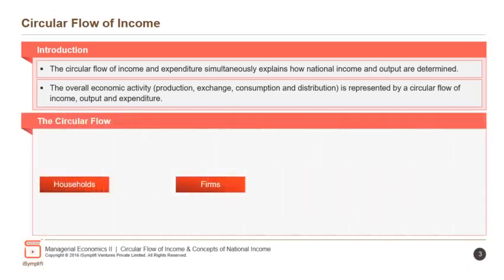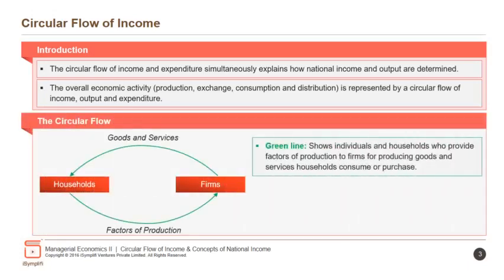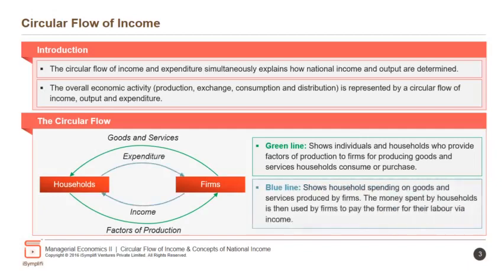In the circular flow, the green line shows individuals and households who provide factors of production to firms for producing goods and services. The blue line shows household spending on goods and services produced by firms. The money spent by households is then used by firms to pay the former for their labour via income.